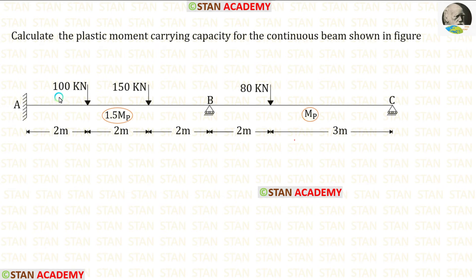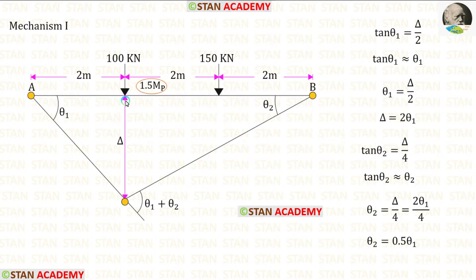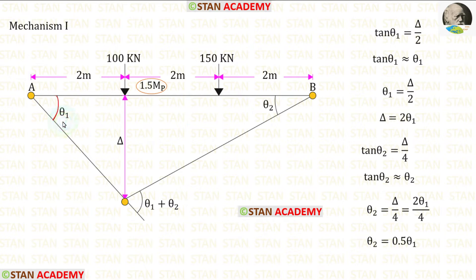Let us make the first mechanism. In this mechanism, let us assume that the third plastic hinge occurs under the point load 100 kN. Let us keep the virtual displacement under the load as delta. Let us keep this angle as theta 1 and this angle as theta 2. So this angle should be theta 1 plus theta 2.